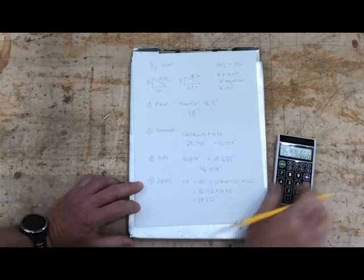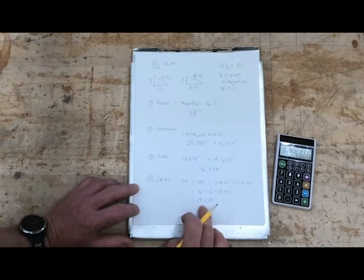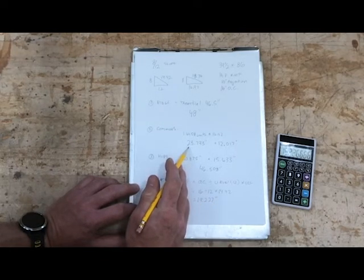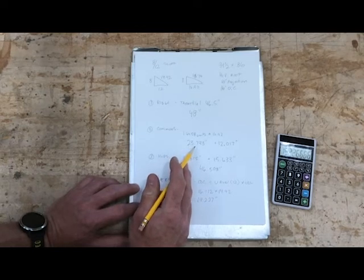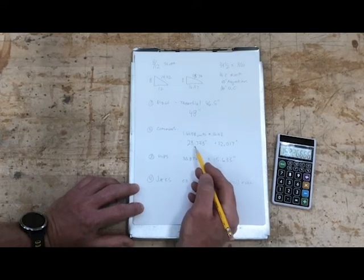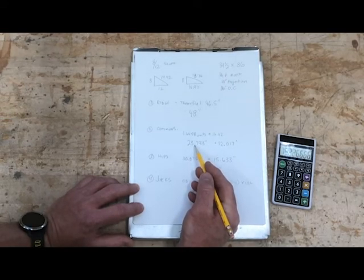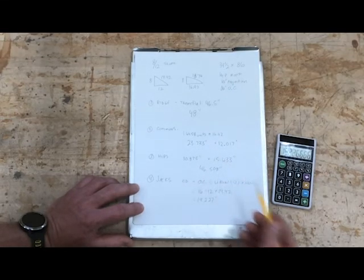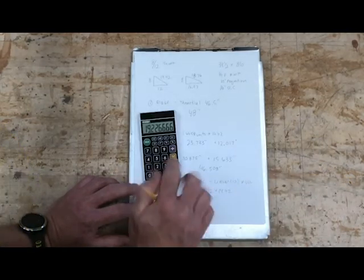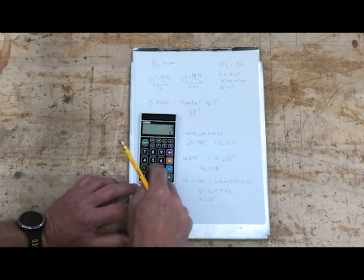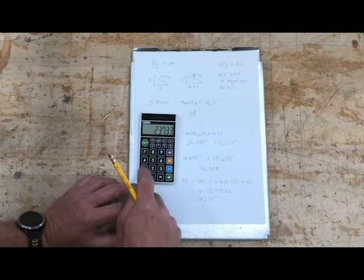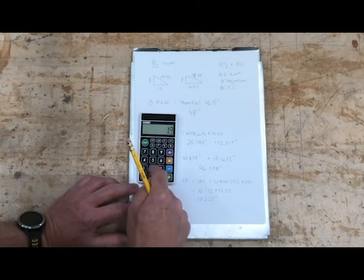Now it all depends on how we're going to use this. If we're going to lay out from the corner or if we're going to shorten from the commons. If everything's laid out from the commons, which is sort of my preferred method to do this, I would take my common difference subtracted from my length of commons. So there's my common difference. And I would start then with my 23.733 and I'm going to subtract my 19.227.